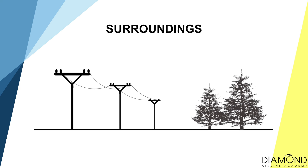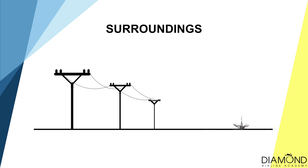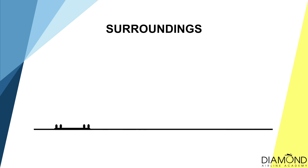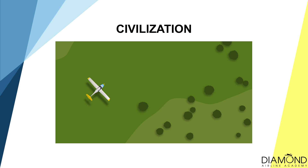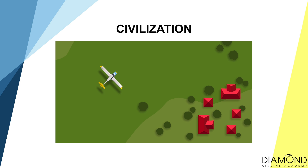Surrounding: avoid tall trees and power lines. Civilisation: ideally land close to towns, so it would be easier to request for help after the landing.